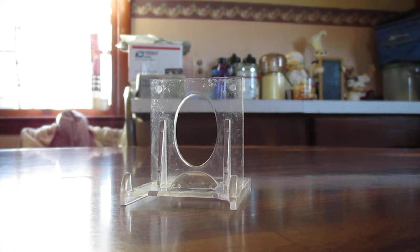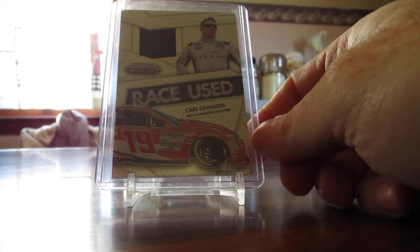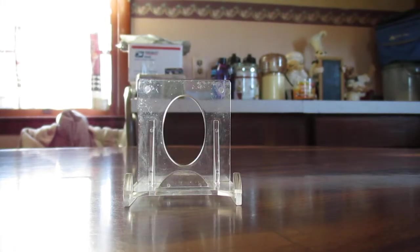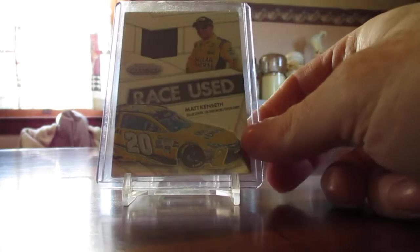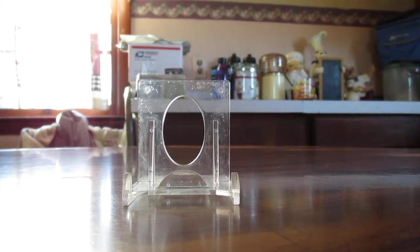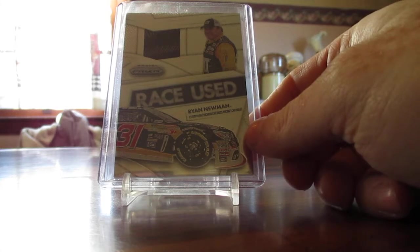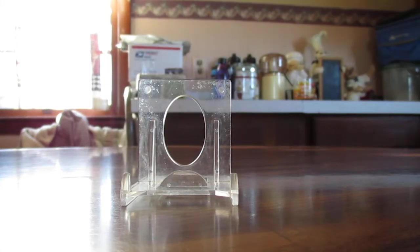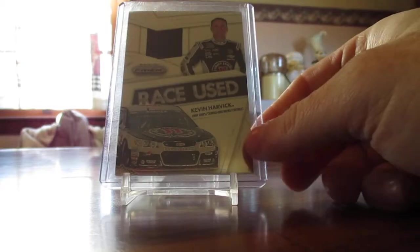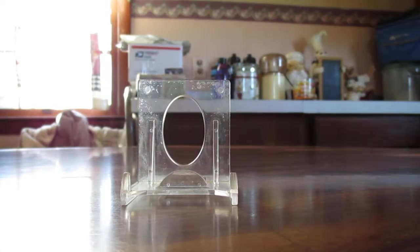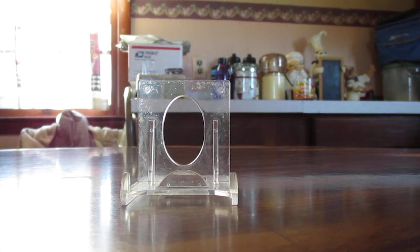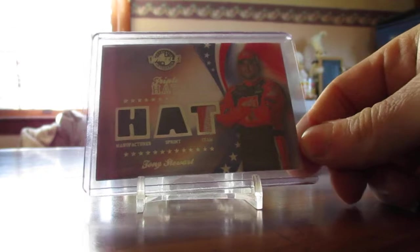And we have some Prism hits. Carl Edwards, these are all race used tire. Matt Kenseth. We got Ryan Newman. We got Kevin Harvick, the closer. And the last one is a hat. It is Manufacturer Sprint and Team Hat, which the team hat has three colors of Tony Stewart.